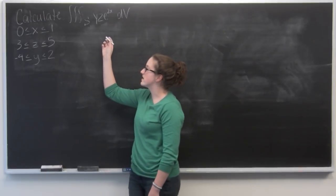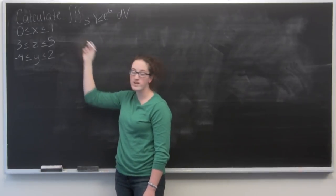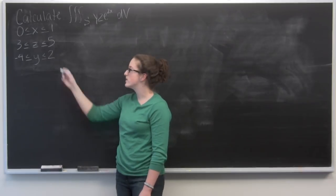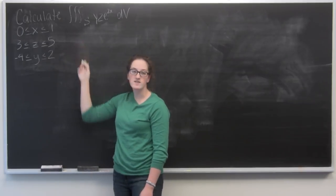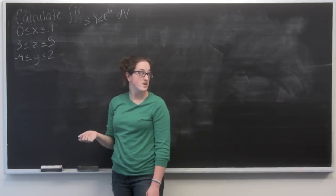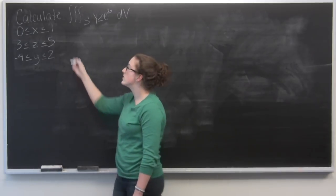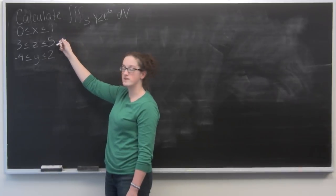OK, so we're given a triple integral to solve. And we aren't given exact bounds of integration, but we're given an expression for each variable. Now, since these are all constants, it doesn't really matter which order we go in. I'm just going to go in the order that they were given. So x, z, and then y.